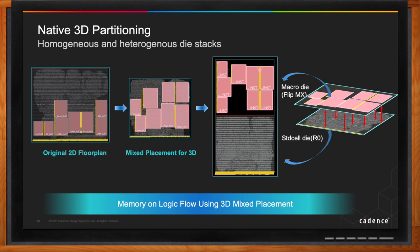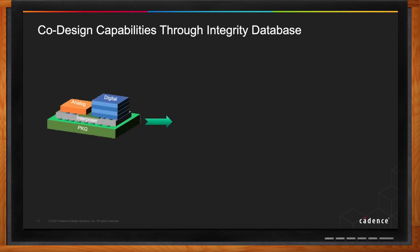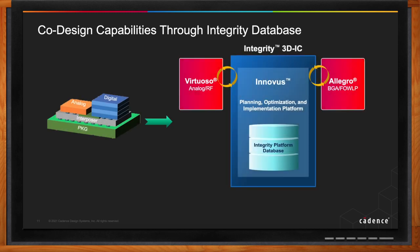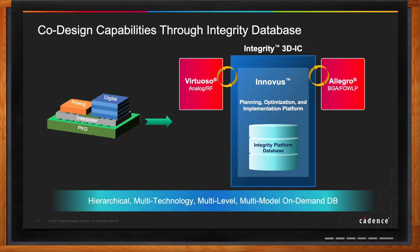This platform is primarily built on top of our digital implementation platform, which is Innovus. Integrity 3D IC leverages the high-capacity benefits from Innovus. Through different methods to exchange data between platforms — like Open Access or the MCM file format — it's possible to do co-design with other platforms using Integrity 3D IC.